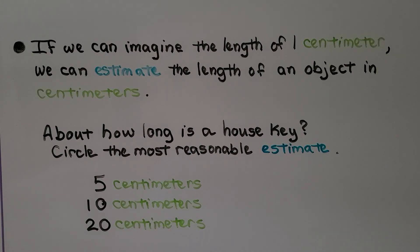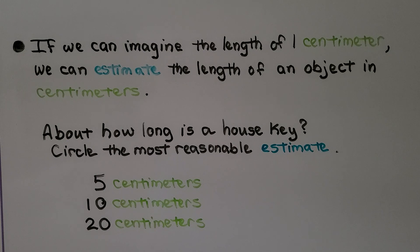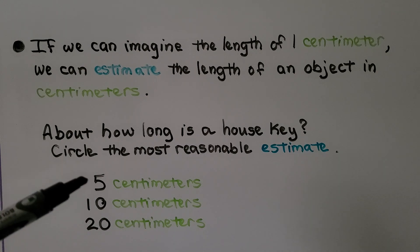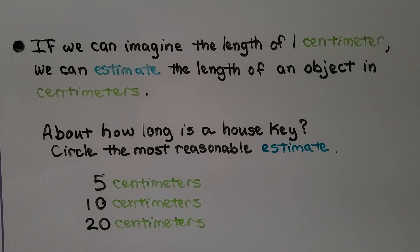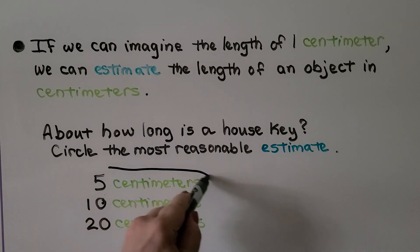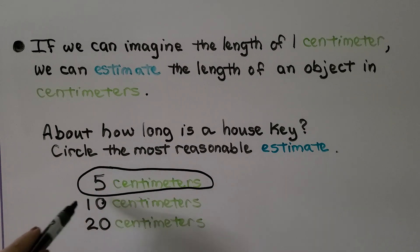If we can imagine the length of 1 centimeter, we can estimate the length of an object in centimeters. About how long is a house key? Circle the most reasonable estimate. Do you think a house key is about 5 centimeters, 10 centimeters, or 20 centimeters? If you said 5 centimeters, you're right — a house key is about 5 centimeters long. 10 and 20 centimeters would be too long.